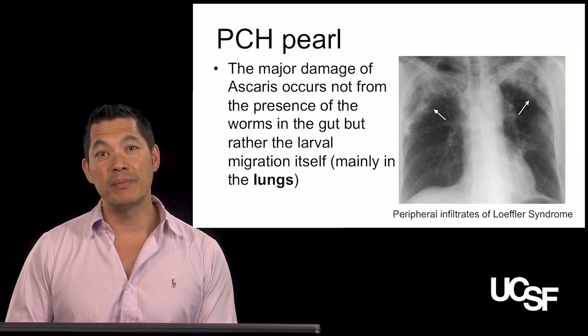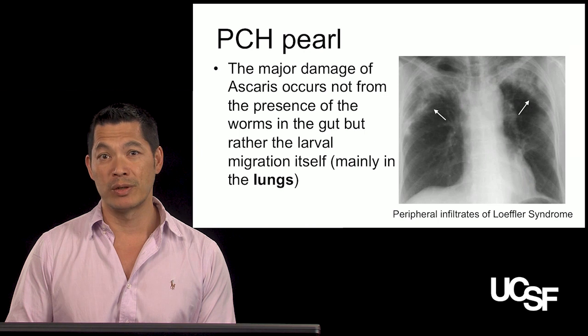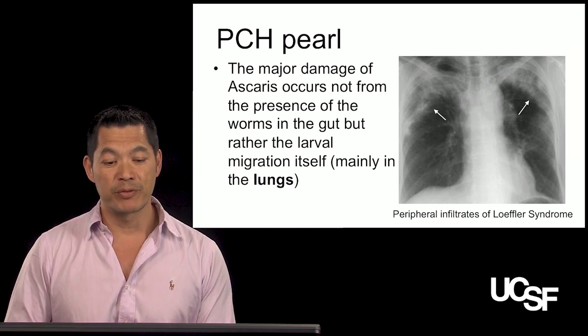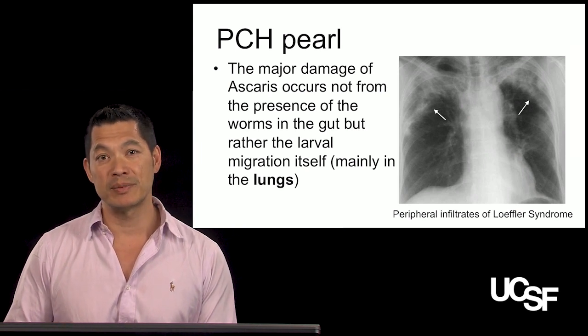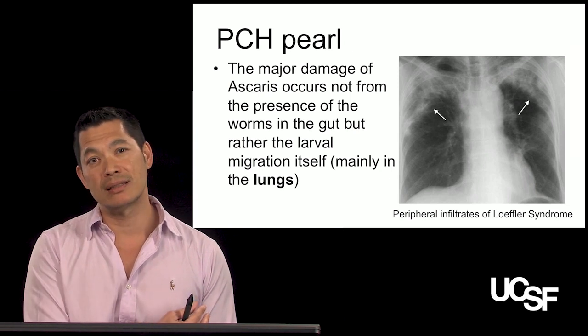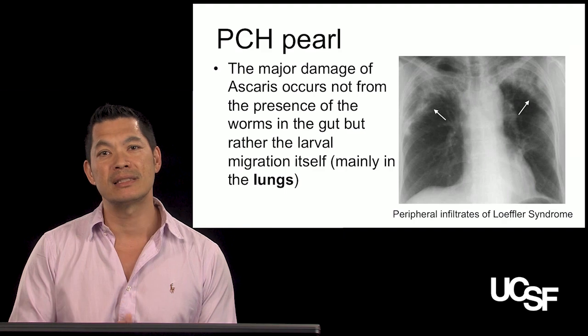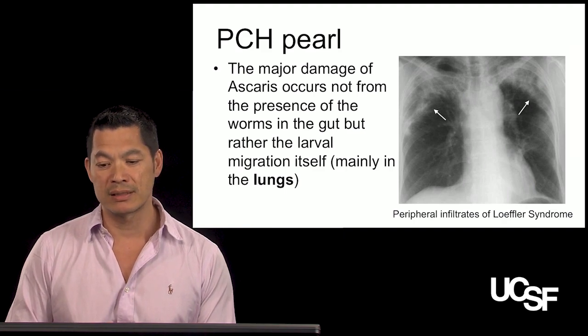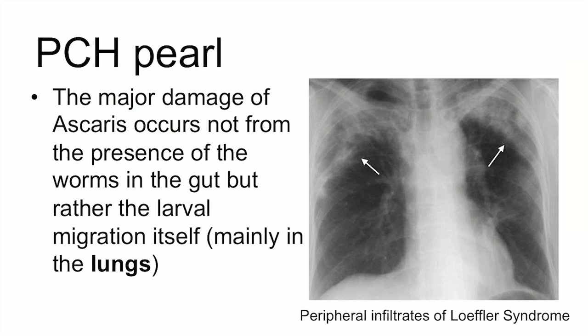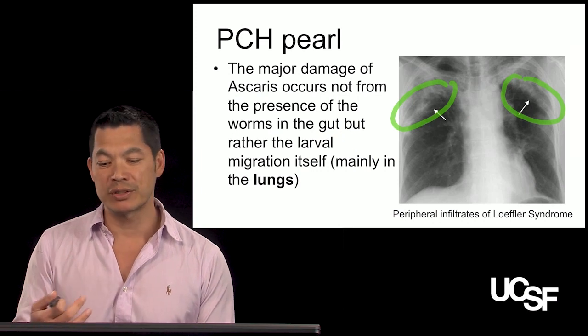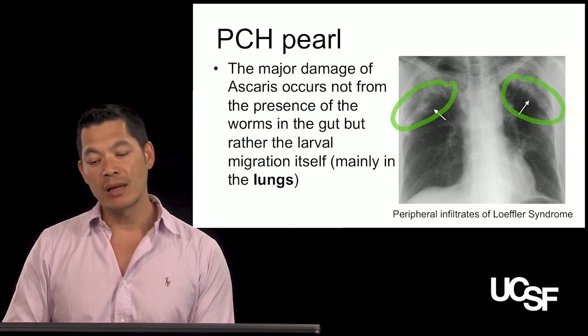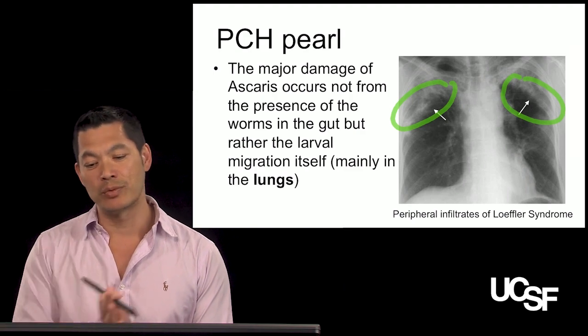My pearl in this section: the major damage of Ascaris occurs not from the presence of worms in the gut, although some people may have obstruction, but rather from the migration of the larvae itself — transporting from the gut to the lungs. That process causes a lot of inflammation and the syndrome we call Loeffler syndrome. You see peripheral infiltrates in Loeffler syndrome, which are transient as the worm is migrating through the lungs. That's the end of the first part of our talk about roundworms — there are more to cover, so come back soon.